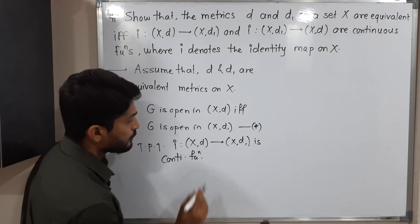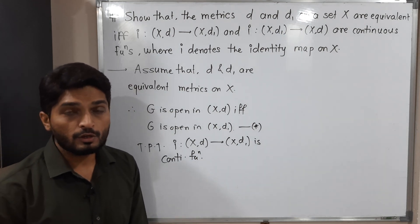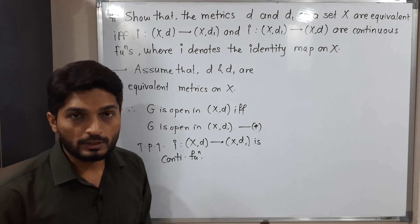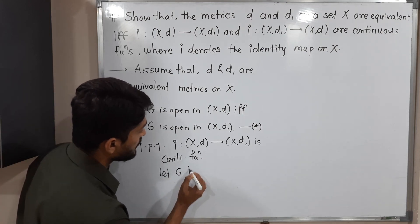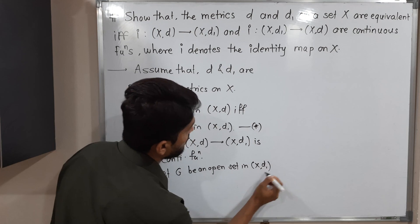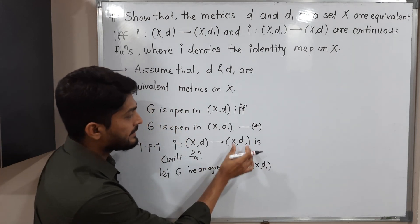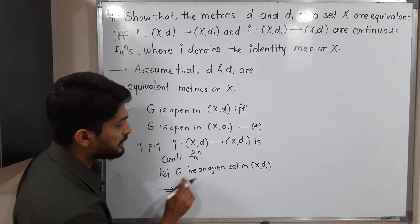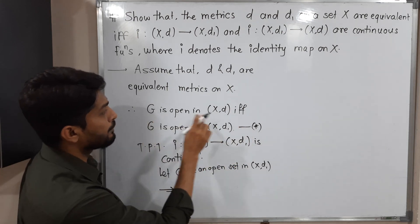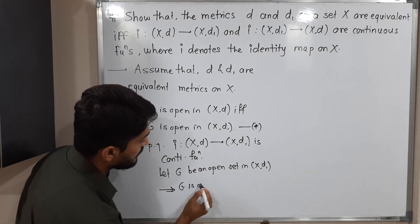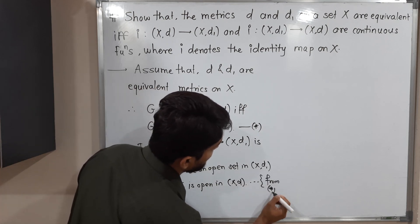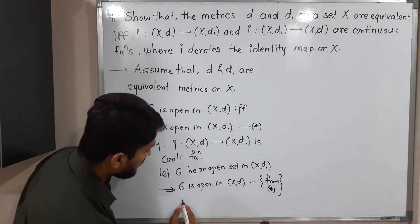To prove i is continuous, we take any open set in the codomain and prove that its inverse image is open in the domain. Let G be an open set in (X,d1). Then by statement (★), if G is open in (X,d1) then G is open in (X,d). Therefore G is open in (X,d).